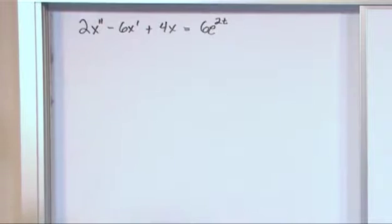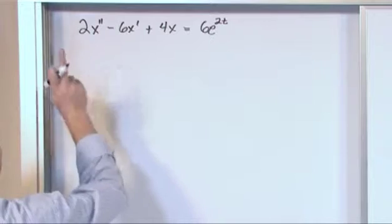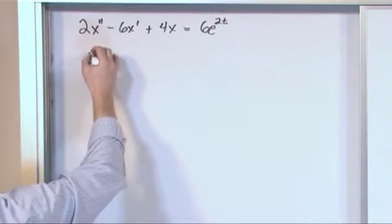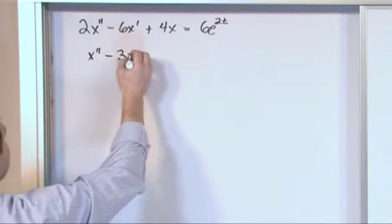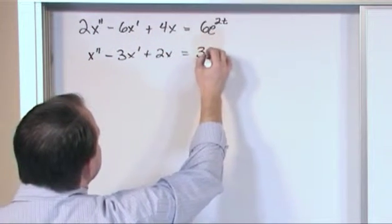The first thing we want to do is put it in standard form. That's what we have to do for variation of parameters. So we're going to divide by 2. So what we'll have is x double prime minus 3x prime plus 2x equals 3e to the 2t.